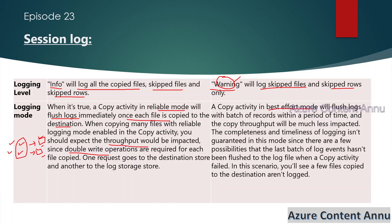The best effort mode logs details in batches — for example, once 10 files are copied, it logs their details, then the next batch, and so on. This ensures throughput is not impacted and takes less time. However, because of batch processing, it does not guarantee completeness and might miss some details. If you have fewer records, use reliable mode. For millions of records, best effort mode is recommended.